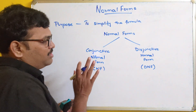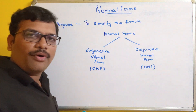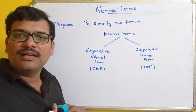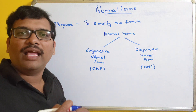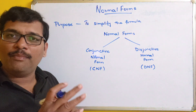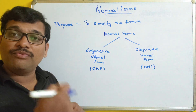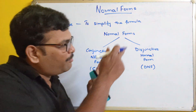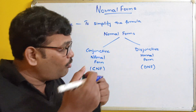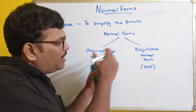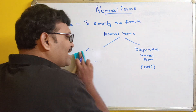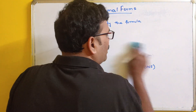Before going to see conjunctive normal form and disjunctive normal form in depth, we need to learn two things: one is elementary sum and elementary product. In this session, we will see what is the elementary sum and what is the elementary product. In the next session, we will see what is the CNF and DNF and how we can change the formula into either CNF or DNF.